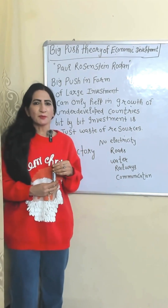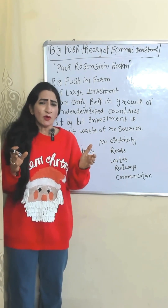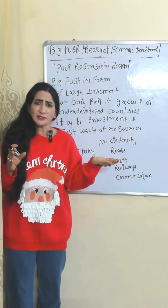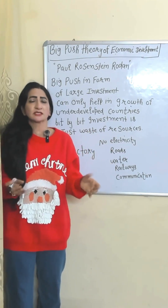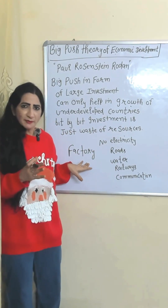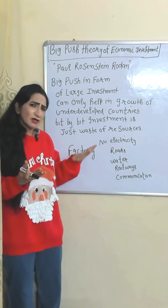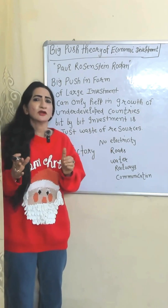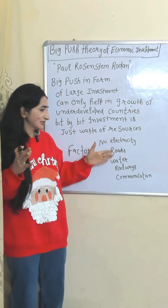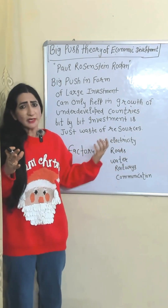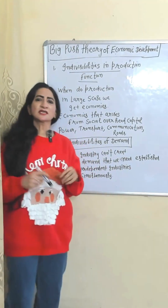Big Push Theory given by Paul Rosenstein-Rodan states that a big push in the form of large investment can only help in the growth of underdeveloped countries — bit by bit investment is just a waste of resources. For example, if you open a factory in an underdeveloped country where there is no proper electricity, roads, water, railway, or communication, your factory will not work well. That's why the government needs to first make big investments in infrastructure like electricity, roads, water, and railways — then the private sector will automatically invest, and eventually the country starts growing.